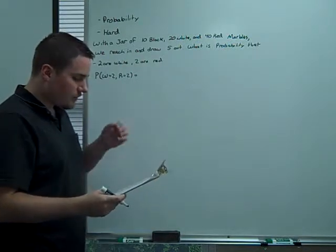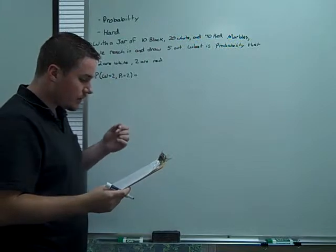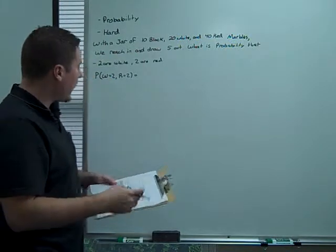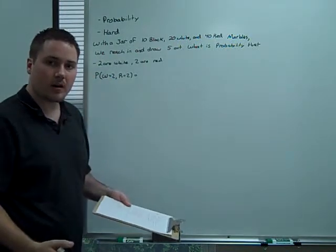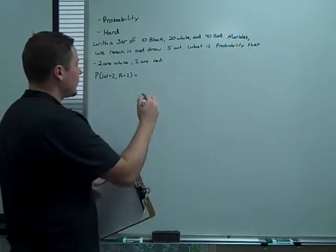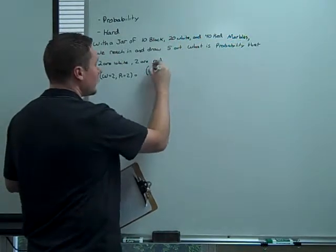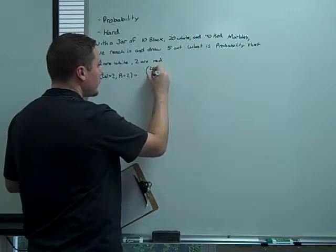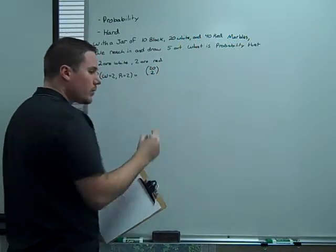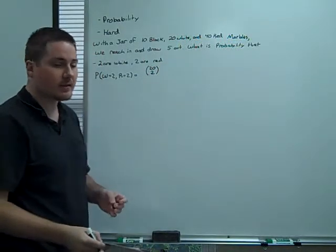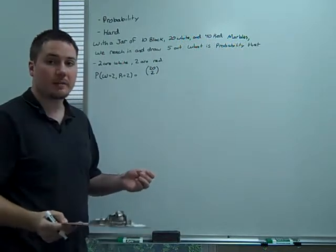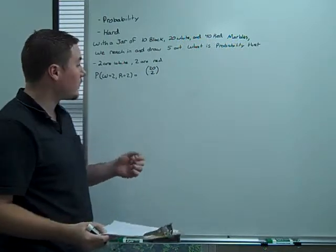The way we would do this is we would first figure out how many ways can we draw white marbles. There are 20 of them and we're choosing two of them. So 20 choose 2 seems like a reasonable answer to the question, how many ways can I pick two white marbles?